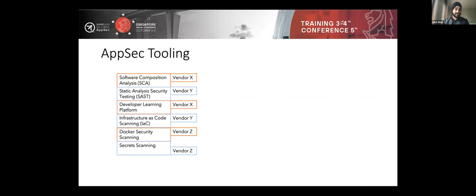I've omitted DAST or API security scanning from this slide, but you can use those as part of your AppSec program too. Now, here's where things get interesting. Pre-2020 or pre-COVID, companies were using SAST and SCA tools from different vendors — some were good at SCA, some at SAST. Some were using paid tooling from one or two vendors for SCA or SAST, and trying to use open source tooling to complete their AppSec program. But using multiple vendors brings an interesting problem.